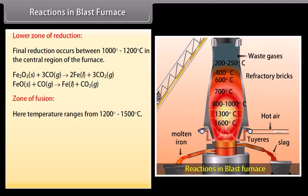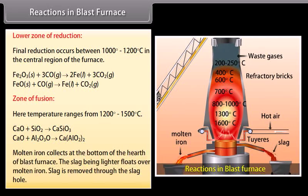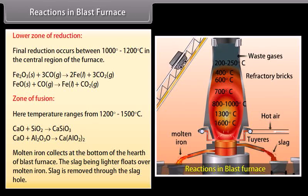Here, temperature ranges from 1200 to 1500 degrees Celsius. Limestone decomposes into calcium oxide which acts as a flux and combines with the impurities of SiO2 and Al2O3 and removes them as slag. Molten iron collects at the bottom of the hearth of blast furnace. The slag, being lighter, floats over molten iron. Slag is removed through the slag hole.